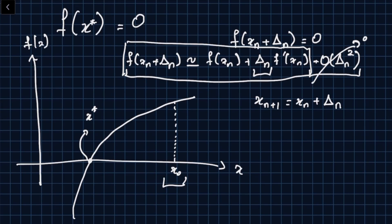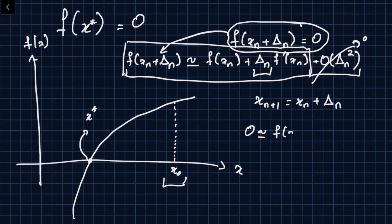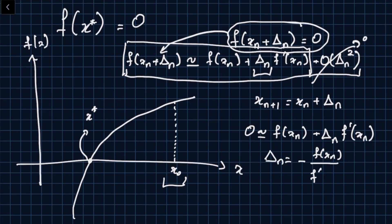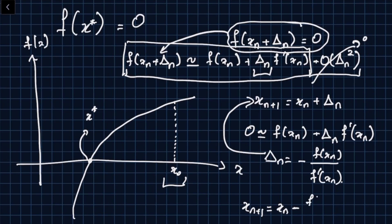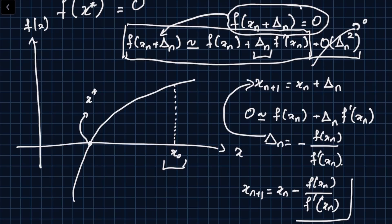Since we want f(x_n + delta_n) = 0, we set the Taylor approximation to zero: 0 ≈ f(x_n) + delta_n · f'(x_n). Solving for delta_n gives: delta_n = -f(x_n) / f'(x_n). Plugging this back, Newton's update rule is: x_{n+1} = x_n - f(x_n) / f'(x_n). This is Newton's method.